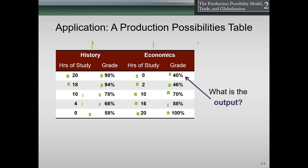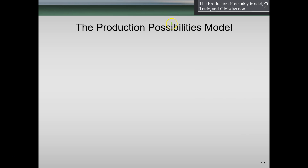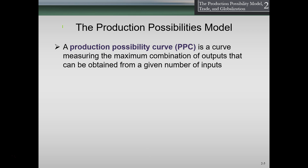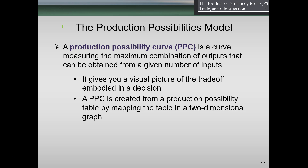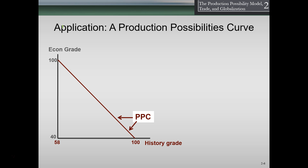In this example, the output is the grade and the input is the time spent studying. The production possibility curve, or PPC, is a curve measuring the maximum combination of outputs that can be obtained from a given number of inputs. It gives you a visual picture of the trade-offs embedded in a decision. We can take that table we just made and graph it in a two-dimensional graph, mapping the data points to create the curve.